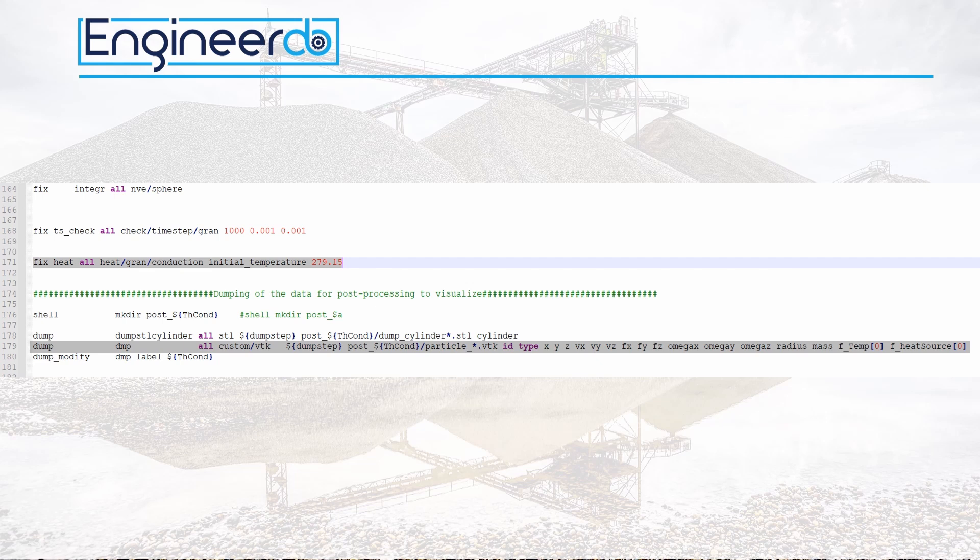In line 179 I also have to activate the writing of result files to see the temperatures in the result files. In this case, F underscore temp in brackets 0 prints the data out of the temperature to a VTK result file. This can be visualized in Paraview later.